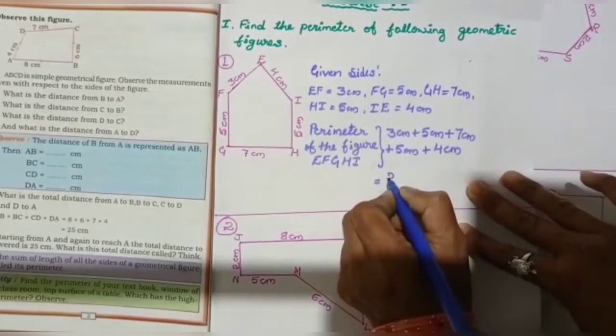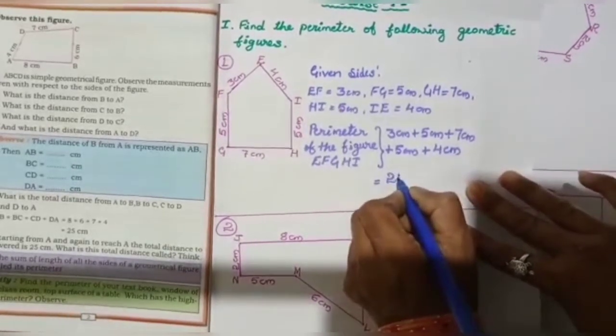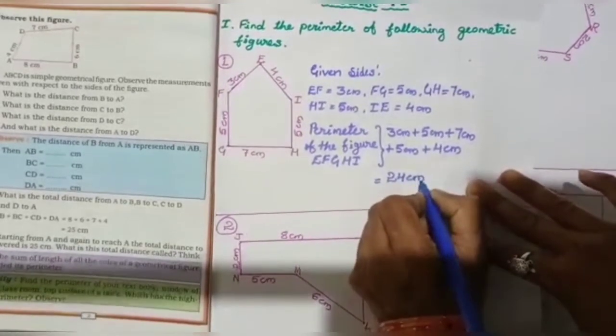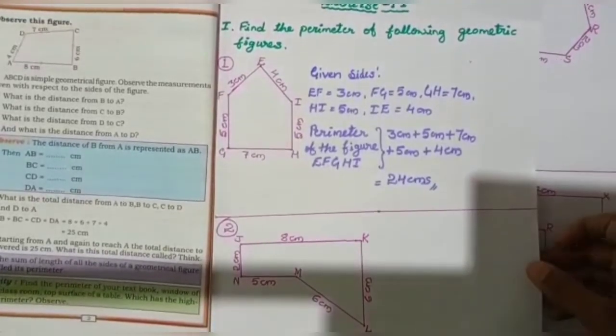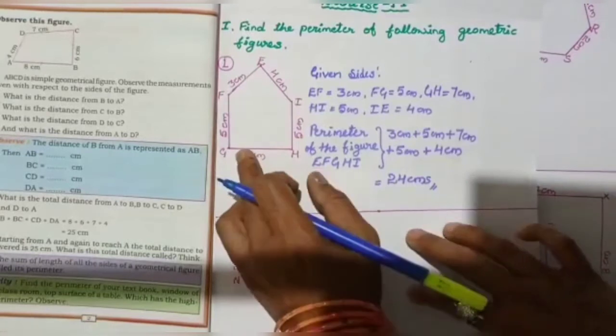So total perimeter of the figure is 24 cm, right?